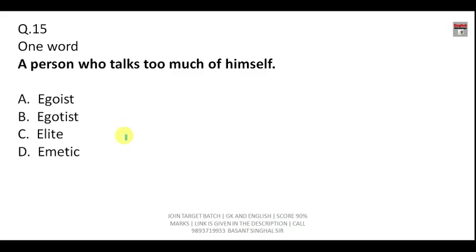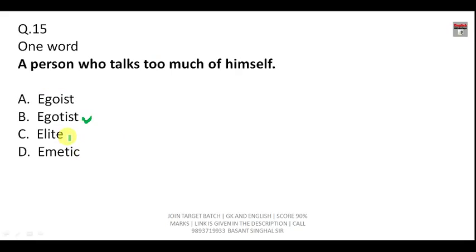One word substitution: 'A person who talks too much of himself.' This is called an 'egotist,' not 'egoist' — an egoist is someone who considers himself very important. Emetic is a substance that makes you vomit, and elite is a top class group of society. The correct answer is B, that is 'egotist.'